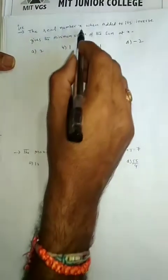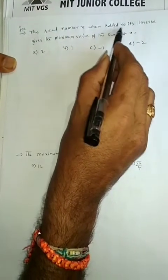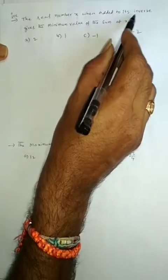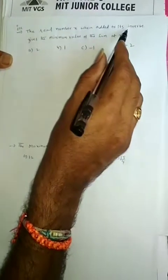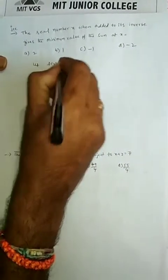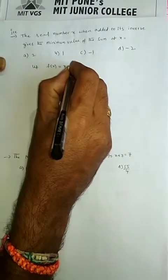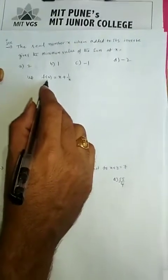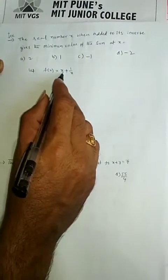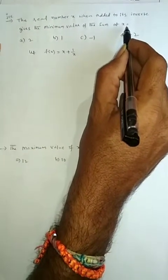Observe the question clearly. The real number x when added to its inverse means 1 by x. When you are adding x plus 1 by x, let the given function be f of x. So f of x is equal to x plus 1 by x. It is a minimum for what value of x — that is the question.